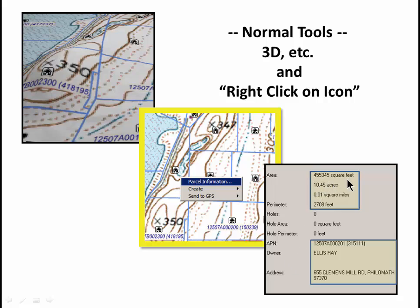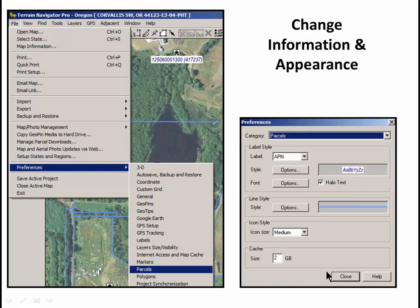So here we have the acreage and the square feet and the perimeter. So if you're laying pipe or fence line, something like that, you have that as well. It's a very easy, quick way to do due diligence to make sure you have an approximate acreage match and perimeter match. Once you have this, you can go to the county assessor's office if you need more information because you have the APN number and you often have the owner and the address. It's very easy, as it is in most TNP features, to make a preference change. A preference change stays that way until you go back and set a new preference. However, you can customize individual layers one by one if you so choose.